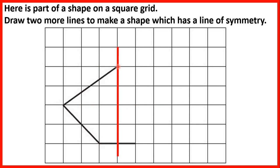Let's see if we can make a shape with a vertical line of symmetry. This point here is three squares to the left of the line, so if we go three squares to the right we can have a corner there. Then we draw two lines to join up our points and we have a shape with a line of symmetry. This corner is one to the left and this corner one to the right; this corner is three to the left and this corner three to the right; and then this corner is on our line of symmetry.